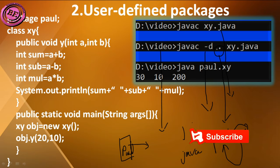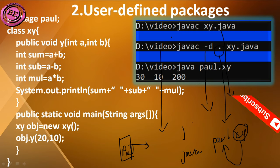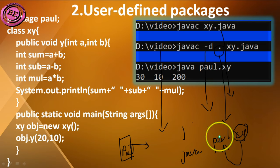If I represent two dots here, it will create the package in the parent directory. The parent directory of 'video' is the D drive, so in the D drive we are going to create the package. A single dot represents that we are creating the package only in that particular current directory.